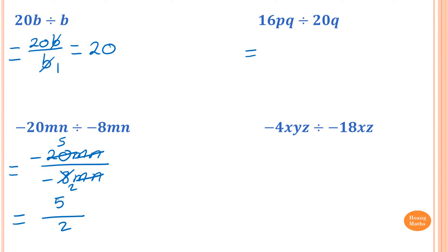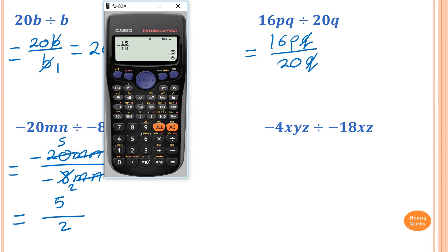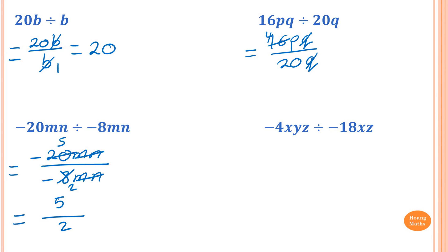16pq divided by 20q. Write as 16pq over 20q. Cancel the q. For the numbers, using the calculator: 16 over 20 simplifies to 4 over 5. So the answer is 4p over 5 — do not forget the p.